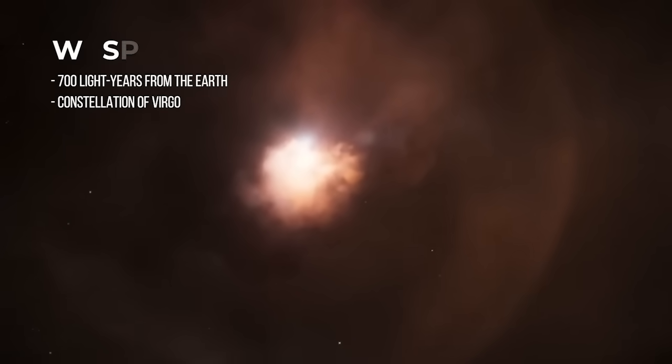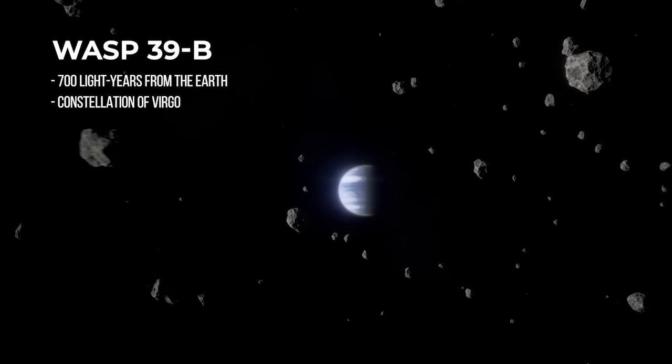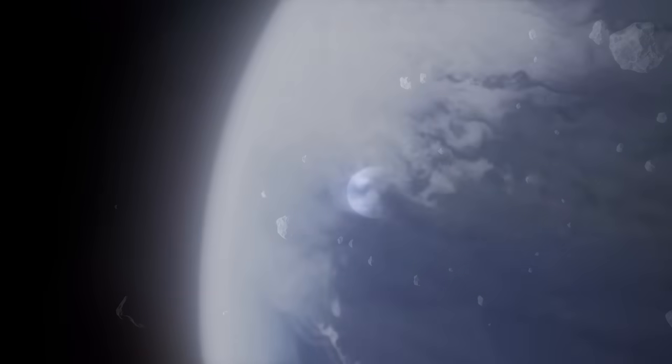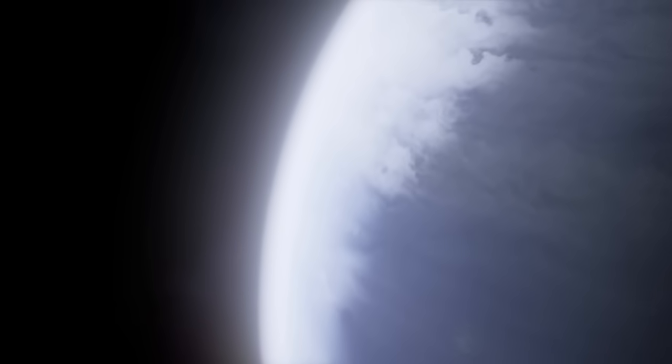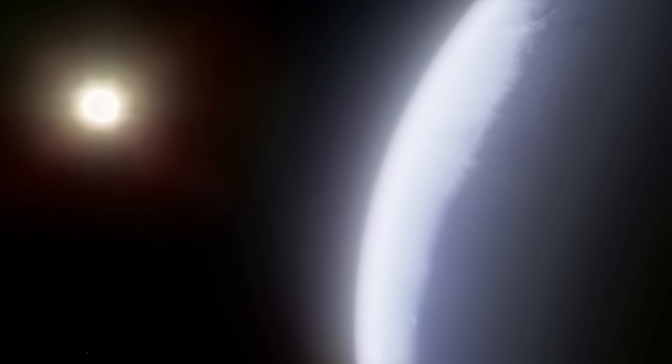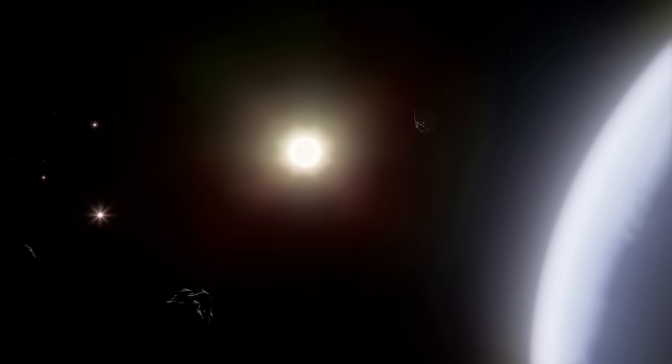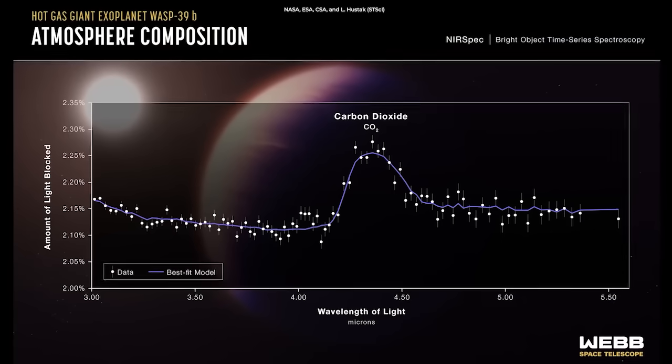After this first deep field image, the telescope continued to make new discoveries. One of the important discoveries of James Webb concerns the exoplanet WASP-39b. The data transmitted by the telescope on this planet show the presence of CO2 in its atmosphere. This is not only the most detailed analysis of an exoplanet's atmosphere to date, but also the first time CO2 has been detected.